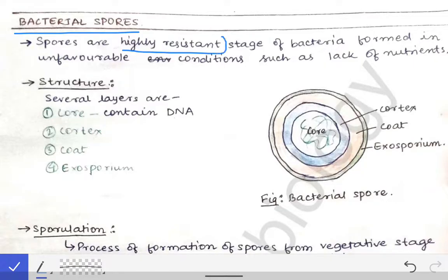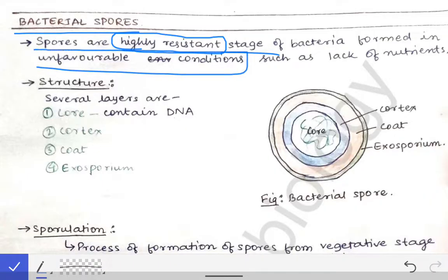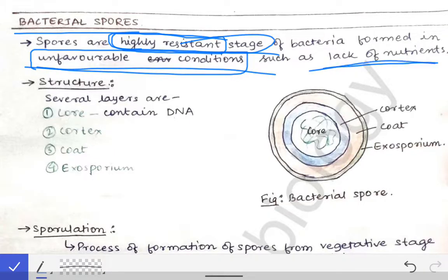Bacterial spores are a highly resistant stage of bacteria which are formed in unfavorable conditions, such as lack of nutrients. In unfavorable situations, the bacteria has to save itself, so it produces this highly resistant stage to protect itself — that is called the bacterial spore.